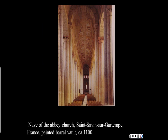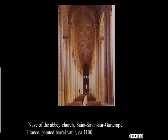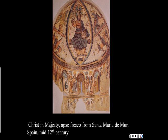Now we'll talk about the decoration of these churches and the artwork of the Romanesque period, which is not surprisingly addressed to the churches themselves. Here is a magnificent painted ceiling in the barrel-vaulted nave of Saint-Savin-sur-Gartempe in France, where we see along the nave ceiling scenes from the Old Testament, which would then lead to the apse where one would find bright paintings of New Testament figures. We're going to look at an apse painting from Santa Maria de Mur in Spain from the 12th century because the Saint-Savin apse is in poor condition.